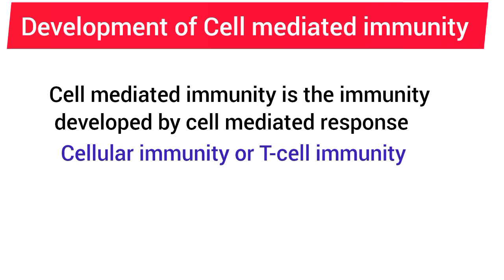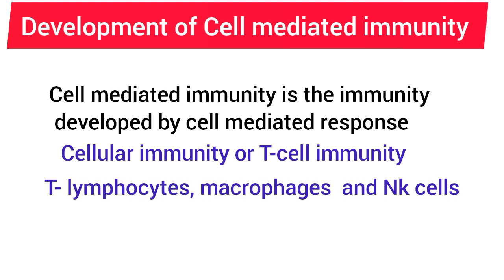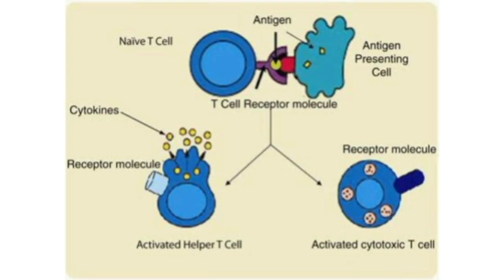Cell-mediated immunity involves several types of cells such as T lymphocytes, macrophages, and natural killer cells, and does not involve antibodies. It is the major defense mechanism against infections by viruses, fungi, and some bacteria, and is also responsible for delayed allergic reactions and the rejection of transplanted tissues. Cell-mediated immunity starts developing when T cells come in contact with antigens. The invading organisms carry antigenic materials, which are released and presented to the helper T cells by antigen-presenting cells.